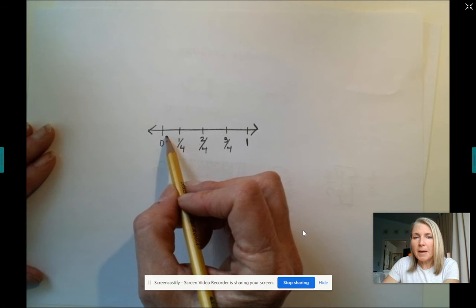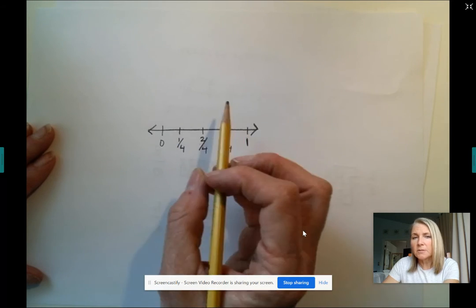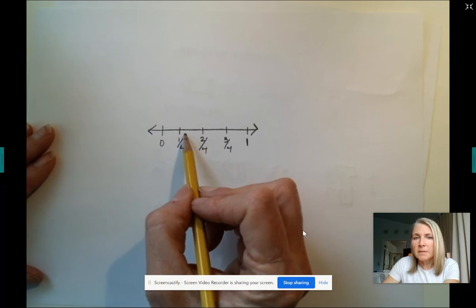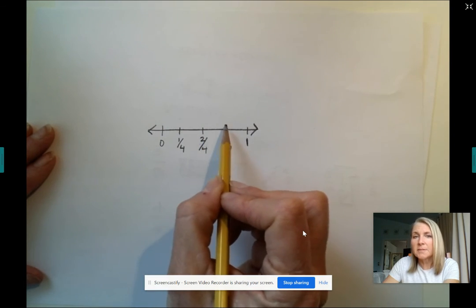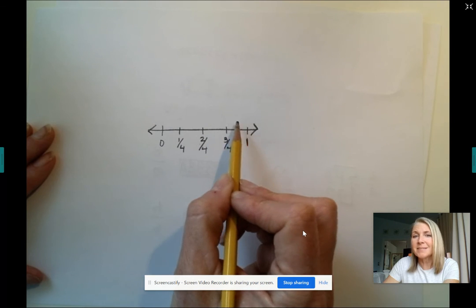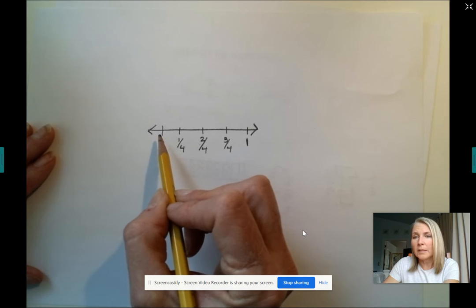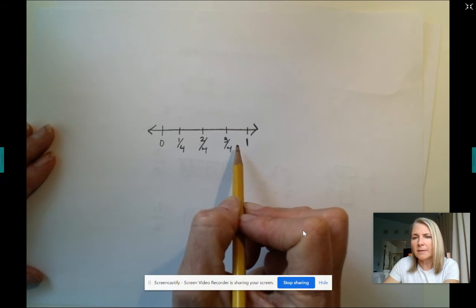So remember, when you're thinking about number lines that are partitioned into fractional parts, this is worth a fourth, this is worth a fourth, this is worth a fourth, and this is worth a fourth. That is creating the one whole line that you have identified here, all right?